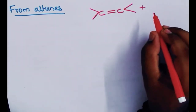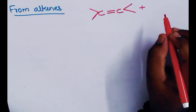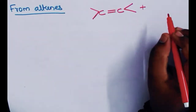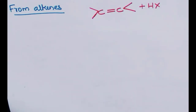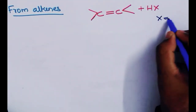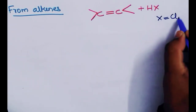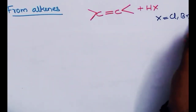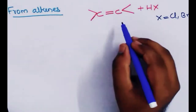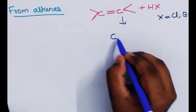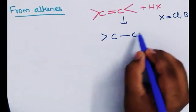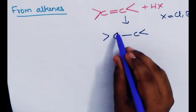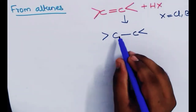If we add hydrogen bromide, chloride, or iodide — in general HX, where X can be Cl, Br, or I — when we add this to the double bond, we break the single bond. The first valence is 2, and this valence is 4.